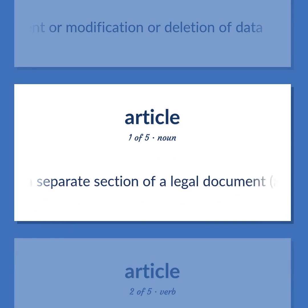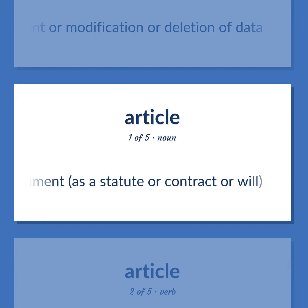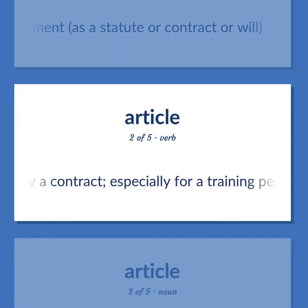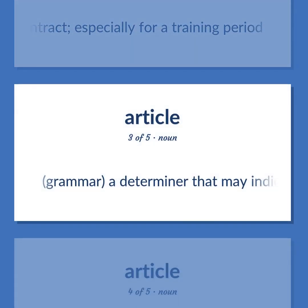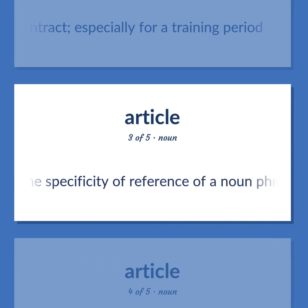Article: a separate section of a legal document, such as a statute, contract, or will. Bind by a contract, especially for a training period. Grammar: a determiner that may indicate the specificity of reference of a noun phrase.